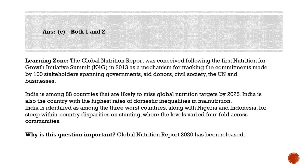The Global Nutrition Report was first published in 2014. The 2020 report stated that India is among the 88 countries likely to miss global nutrition targets by 2025. According to this report, India will miss targets for all four nutritional indicators for which data is available. These four are: stunting among children under five, anemia among women of reproductive age, childhood overweight, and exclusive breastfeeding.